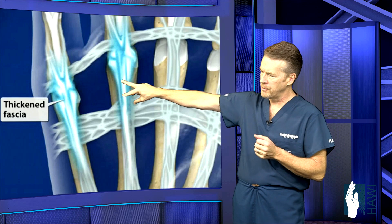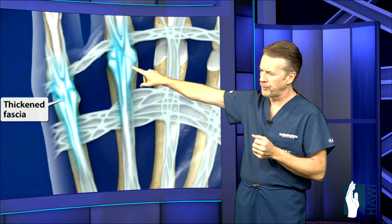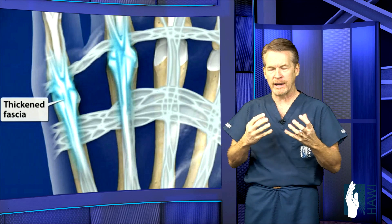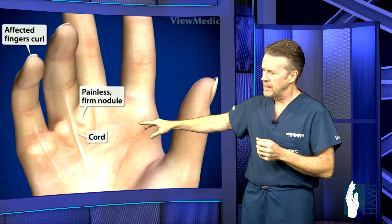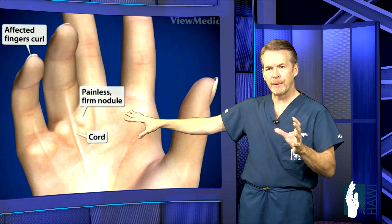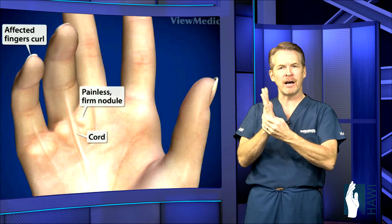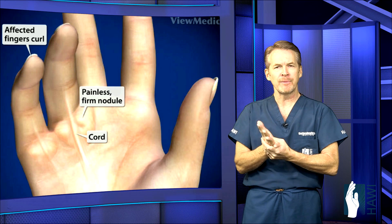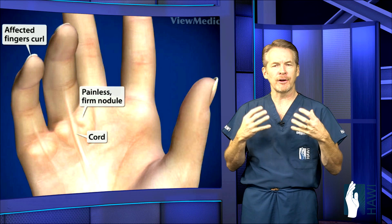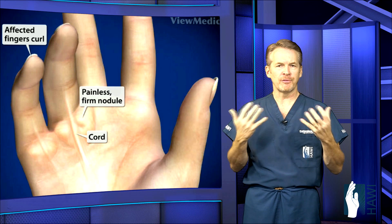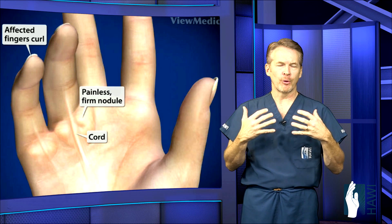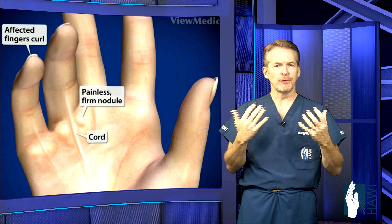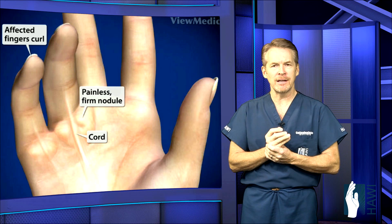You can see here these nodules start to form, or the fascia starts to proliferate and becomes quite thick. Dupuytren's starts out as just a painless nodule. Patients will come in and they feel this thickening. Usually there's some predisposition based on hereditary factors in some individuals, usually of Scandinavian descent.